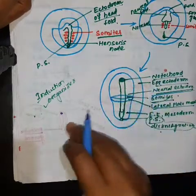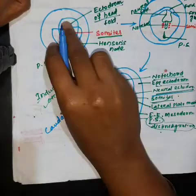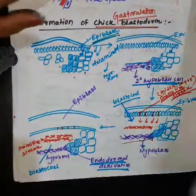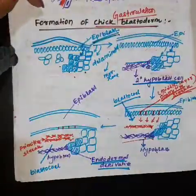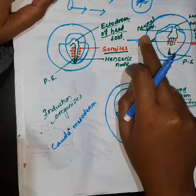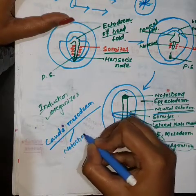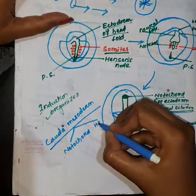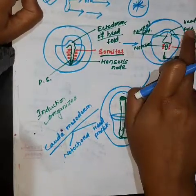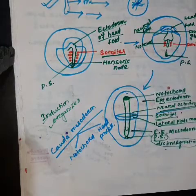After the pre-caudal plate mesoderm is established, the next cells passing through Hansen's node become caudal mesoderm. This caudal mesoderm has two parts: the head process and the notochord. Towards the interior side, the caudal mesoderm gives rise to these two distinct parts.